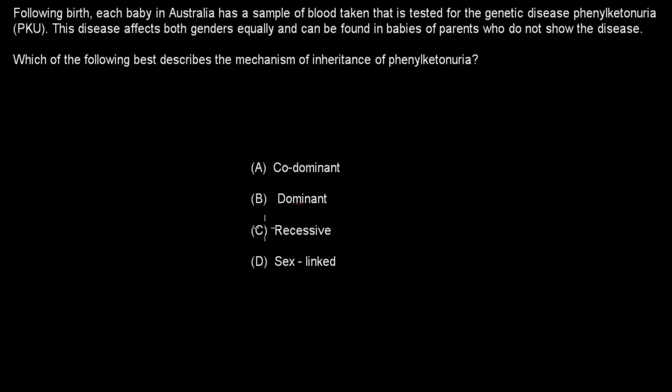Welcome back. The actual answer for this is recessive. It says it can be found in babies, the parents who do not show it. So if the baby shows it but the parents don't show it, it must be recessive. And it says that both genders have it equally, so therefore it can't be sex-linked. So it can't be dominant, it can't be sex-linked. It's not co-dominant. It has to be recessive, so C is correct.